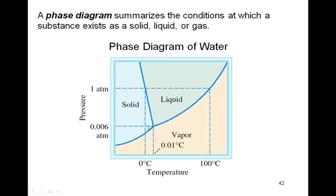This point right here is known as the triple point. This triple point is the point at which a sample of water at 0.006 atmospheres and 0.01 degrees Celsius will exist in all three states of matter. So you'll have some of the sample as a solid, some as a liquid, and some as a vapor, all together in equilibrium.